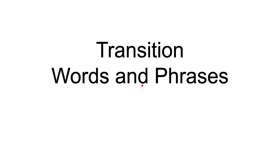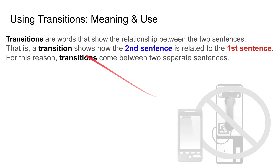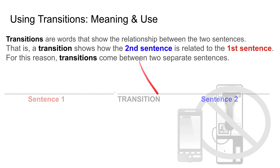We're going to be looking at transition words and phrases. Let's start by looking at their meaning and their uses — what are they and how are they used? Transitions are words that show the relationship between two sentences. In other words, that is, a transition shows how the second sentence is related to the first sentence.